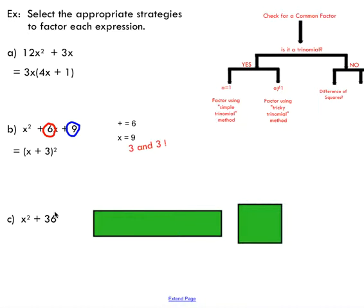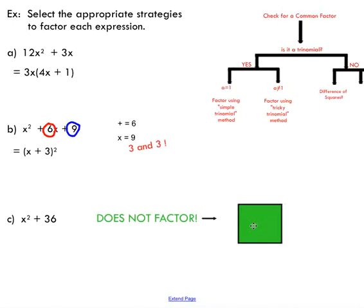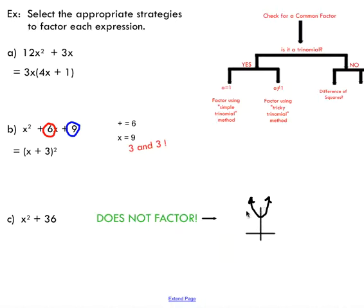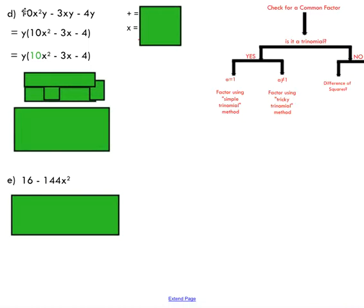The last example on this slide is x² + 36. Going to the flowchart: there's no common factor, it's definitely not a trinomial since there are only two terms, and it is not a difference of squares. So we conclude this expression does not factor. As I showed in my difference of squares video tutorial, this is a parabola shifted up 36 units with no x-intercepts, therefore it cannot be factored.